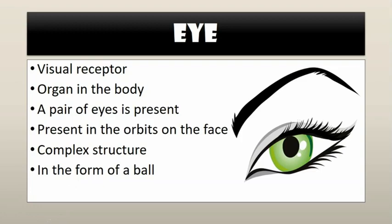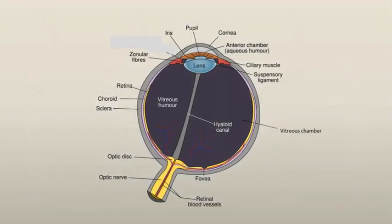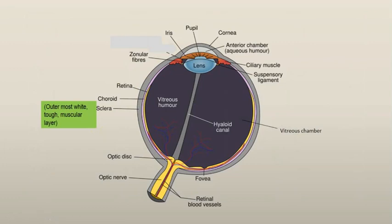Now moving towards the internal structure of the eye: the wall of the eyeball consists of three layers. The eyeball is made up of three layers — we will look at each one by one. With the help of this picture all the parts will become clear. The first part is the outer layer, known as the sclera. It is the outermost white, tough, muscular wall — this is what you see when you look at the eye.